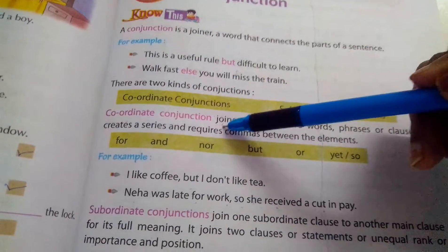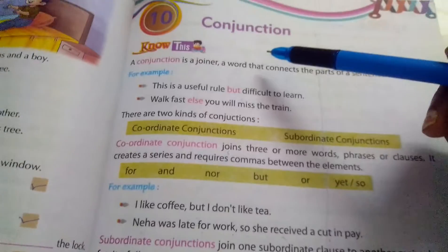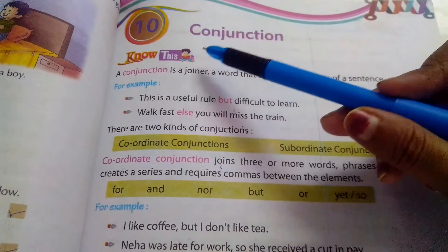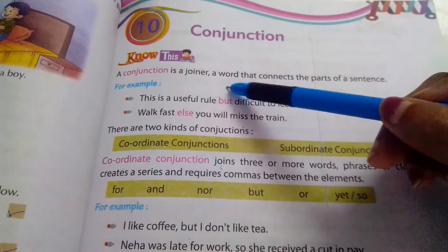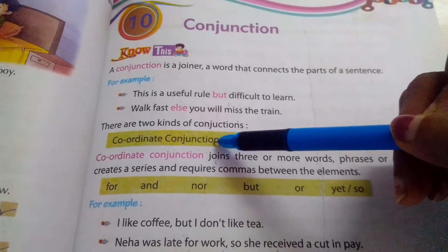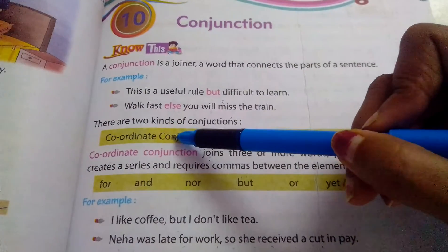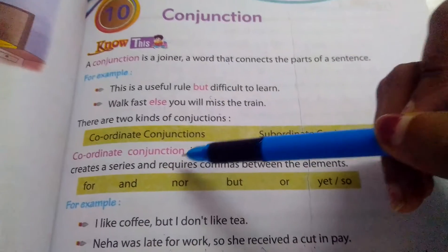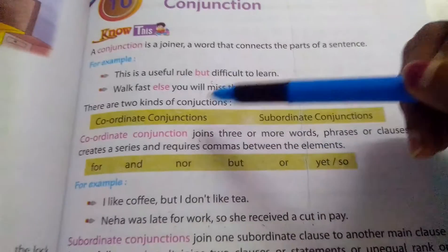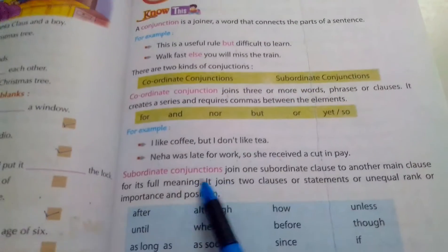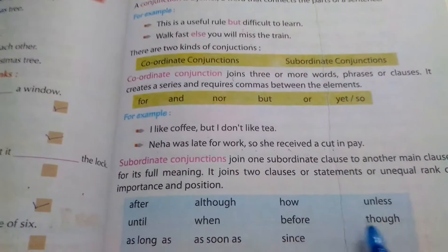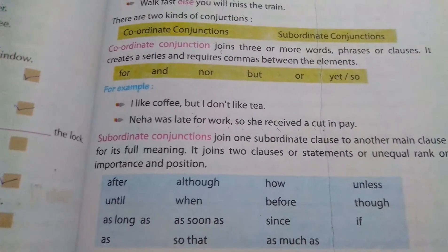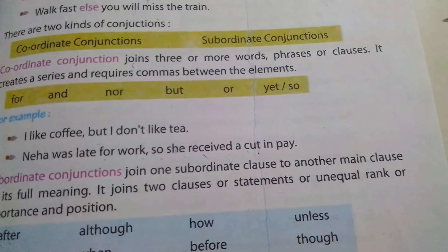Joining words, okay? In normal, simple language, they are joining words. And they are of two types: coordinate and subordinate, okay? So you have to read all these conjunctions. Thank you.